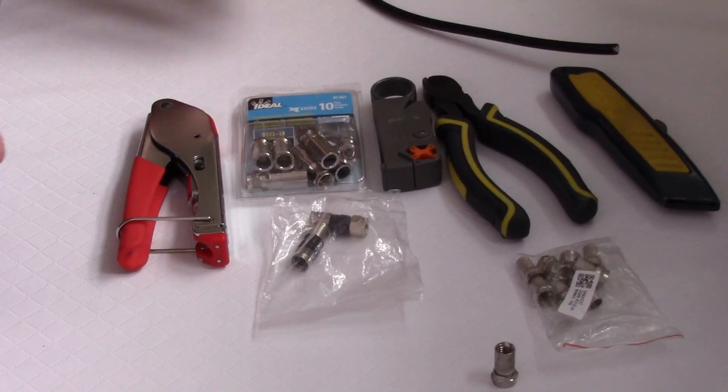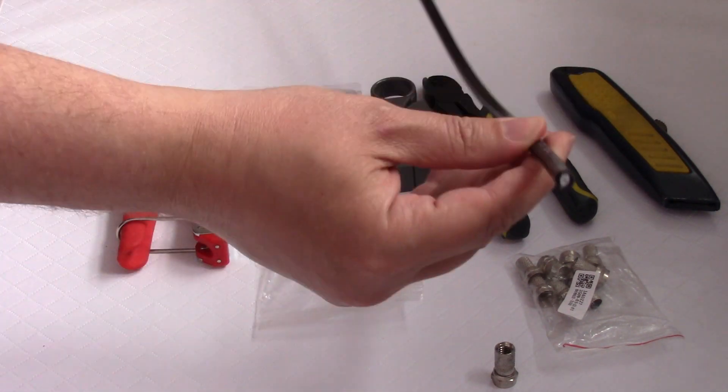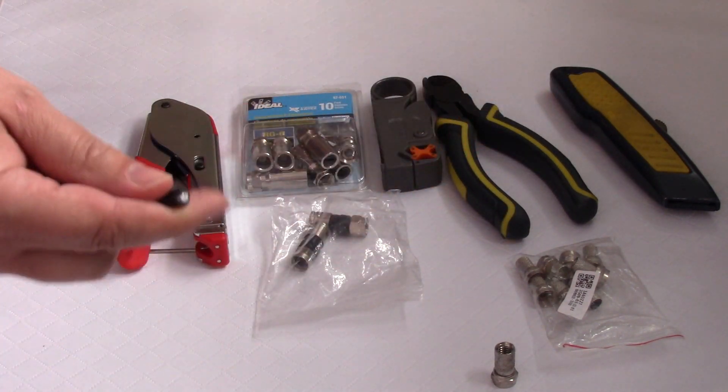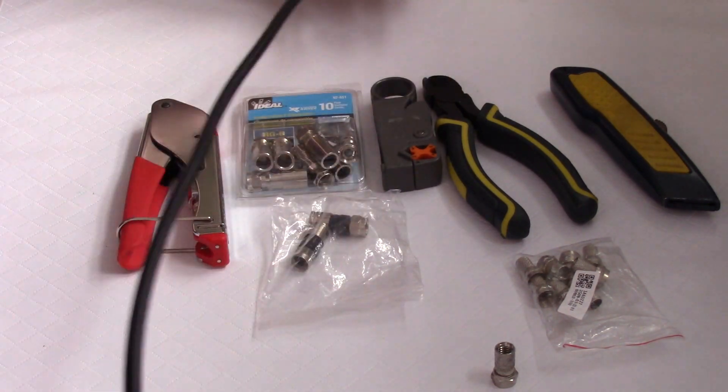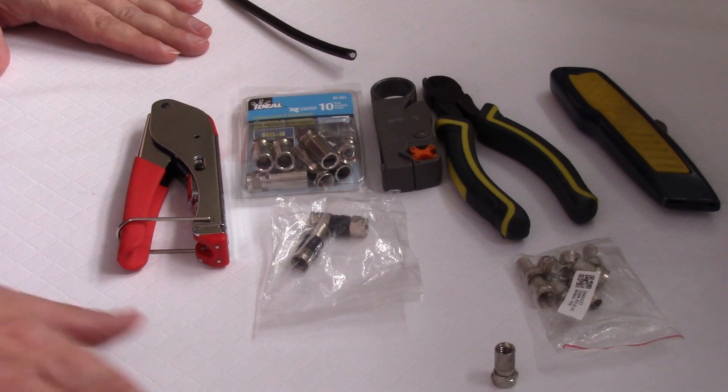Alright. So, I'm going to put some ends on the coaxial cable. So, this might be something you might need to do. Now, I just need a short run of coaxial cable, like a foot and a half or whatever. But I'll show you how to do that. Now, I've got some tools here.